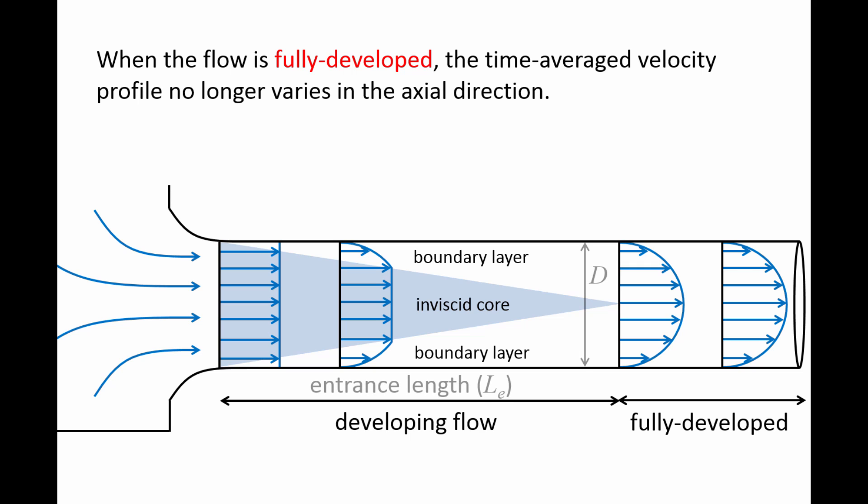The length of the developing region, also called the entrance length Le, is the distance required for a flow to become fully developed. The entrance length is a function of the pipe diameter D and the Reynolds number.